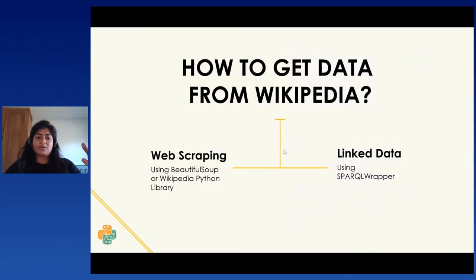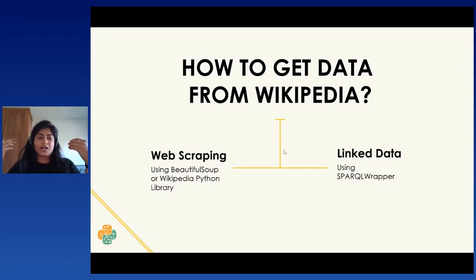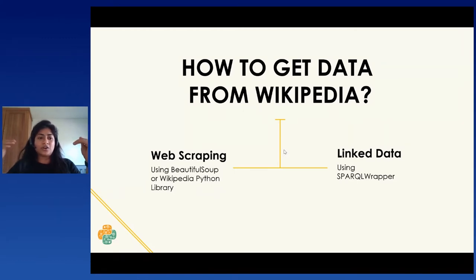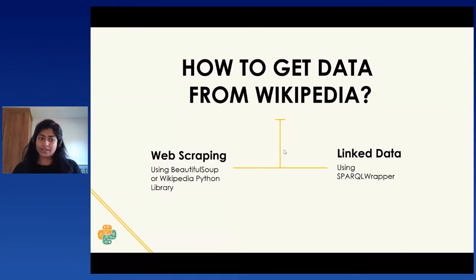There are two ways of getting data from Wikipedia. One would be traditional web scraping and the other would be using linked data. I'll have a demo on how to use traditional web scraping using the Wikipedia Python library, which is basically a wrapper around Wikipedia that lets you load a page into a Wikipedia page object and serve its contents and URLs. And we'll look at how to leverage linked data using the SPARQLWrapper, which is again a Python library that lets you query open data from Wikipedia.